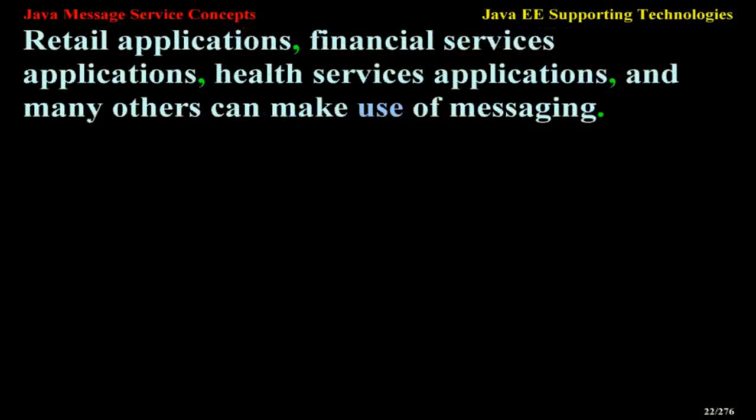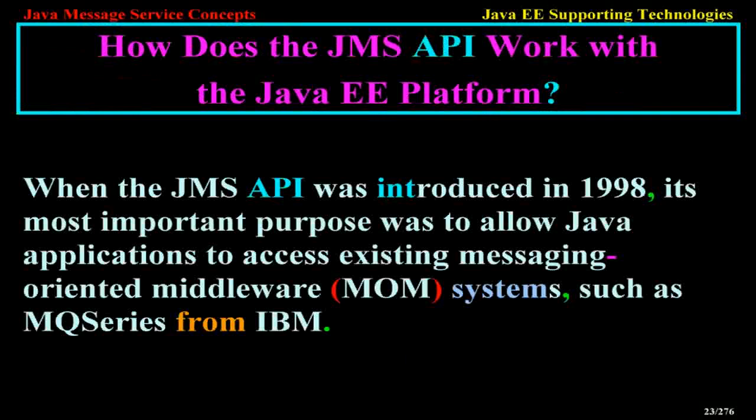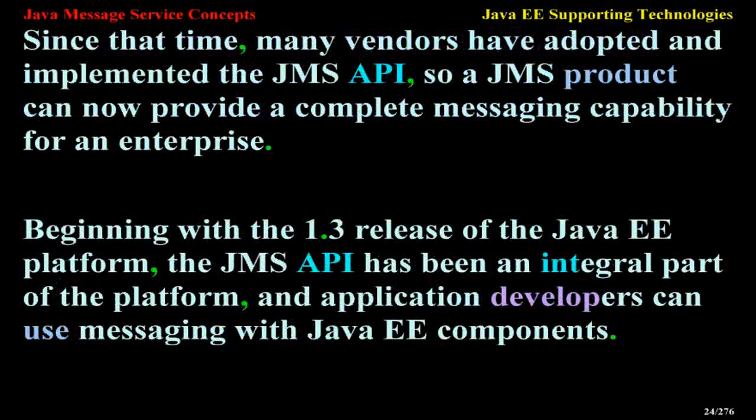How does the JMS API work with the Java EE platform? When the JMS API was introduced in 1998, its most important purpose was to allow Java applications to access existing messaging-oriented middleware (MOM) systems, such as MQSeries from IBM. Since that time, many vendors have adopted and implemented the JMS API, so a JMS product can now provide a complete messaging capability for an enterprise. Beginning with the 1.3 release of the Java EE platform, the JMS API has been an integral part of the platform, and application developers can use messaging with Java EE components.